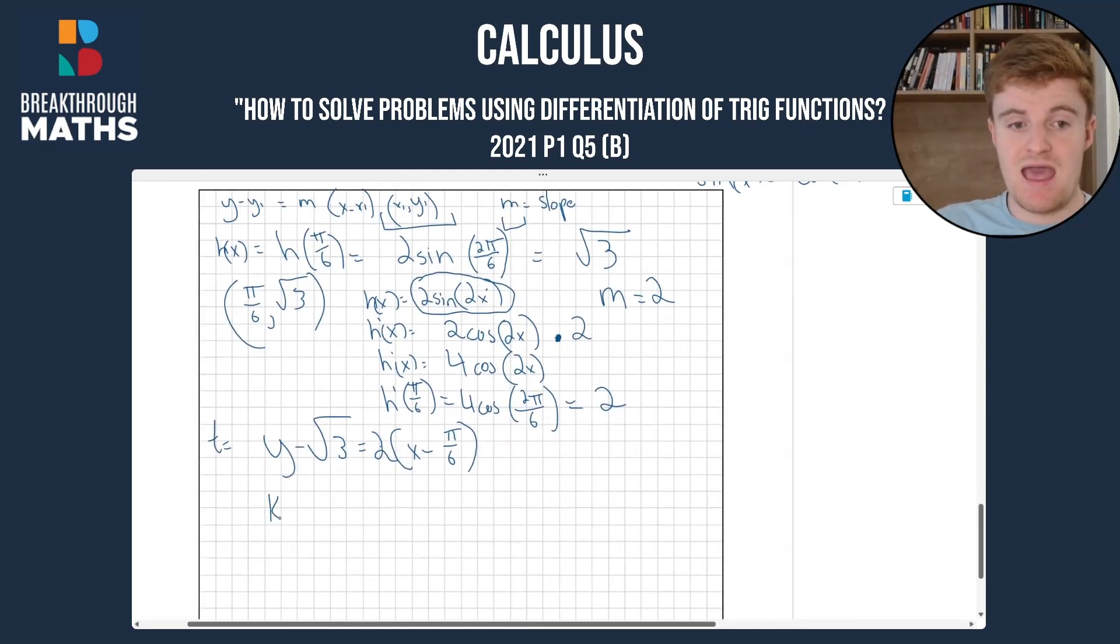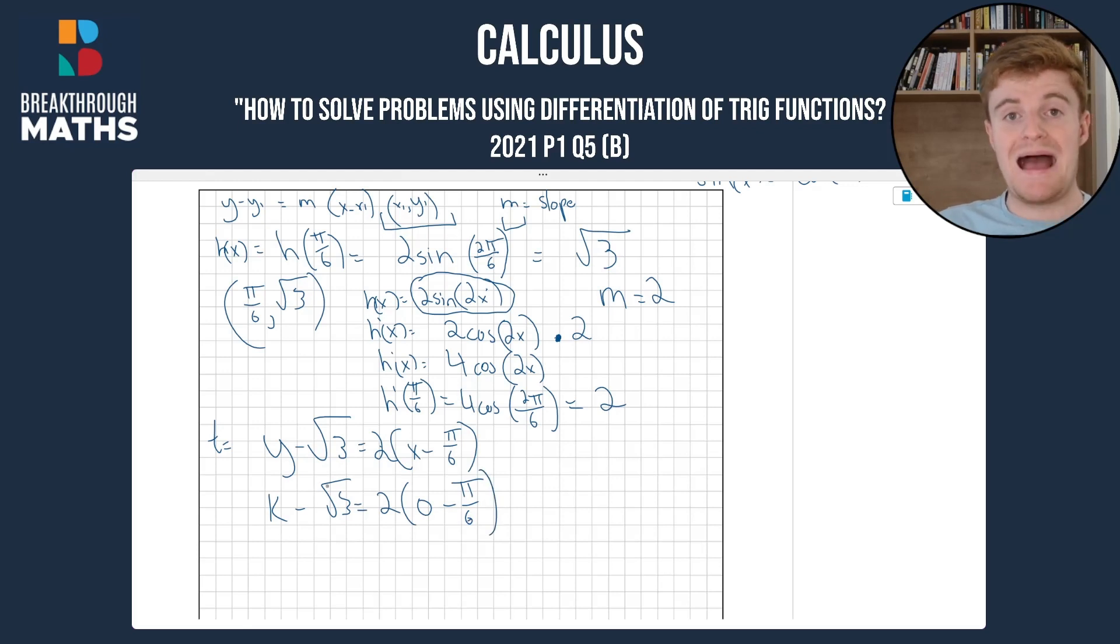So we're going to have k - √3 = 2(0 - π/6). So now we'll multiply it out and we're going to add √3 to both sides to bring it over. So we'll have k = √3 plus 2 times 0 is just going to be 0 and 2 times -π/6 will be -2π/6.